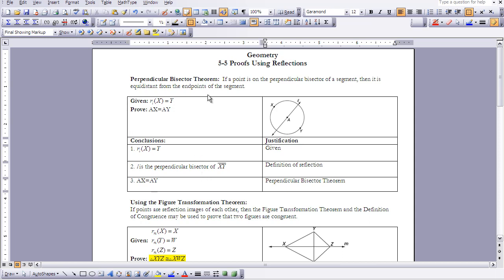Now this theorem we just talked about, the Perpendicular Bisector Theorem, lets me say that any point on the perpendicular bisector is equidistant to the endpoints of the segment. So AX would in fact be equal to AY because of the Perpendicular Bisector Theorem.